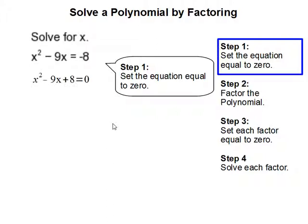In this case, we are going to bring the negative 8 over, so we add 8 on both sides, and that will get us x squared minus 9x plus 8 equals 0.